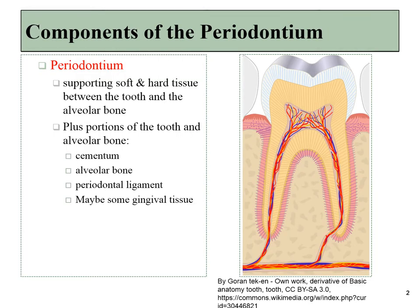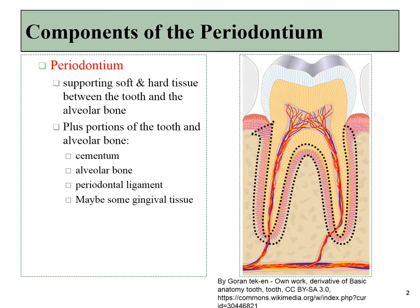The periodontium includes soft and hard tissues connecting the tooth to the alveolar bone. It includes cementum, parts of the alveolar bone, periodontal ligament, and we might even consider some gingival tissue as well.